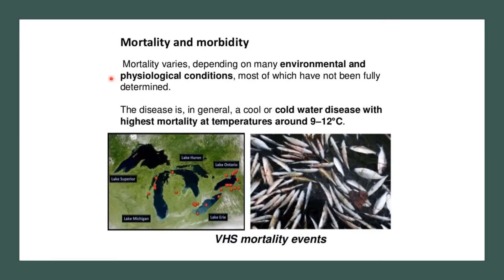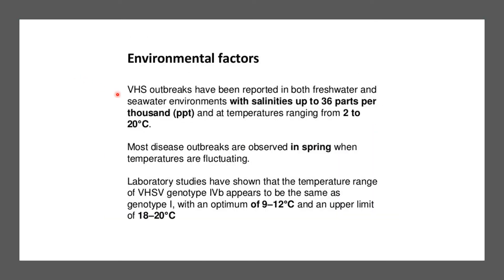Mortality varies depending on many environmental and physiological conditions, most of which have not been fully determined. VHS is generally a cold-water disease with highest mortality at temperatures around 9 to 12°C. VHS outbreaks have been reported in both freshwater and seawater environments with salinities up to 36 PPT and at temperatures ranging from 2 to 20°C. Most disease outbreaks are observed in spring when temperatures are fluctuating.